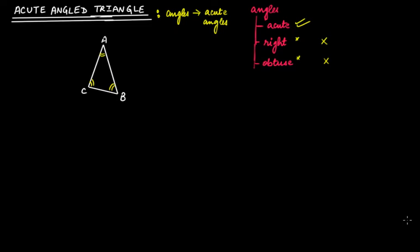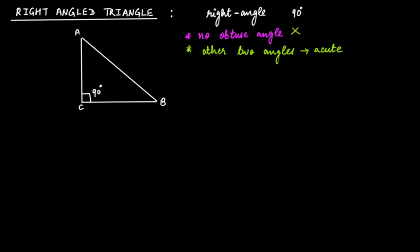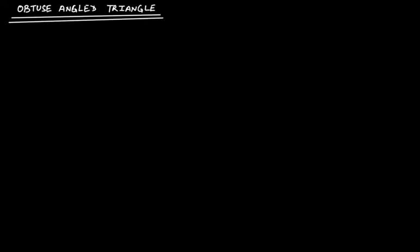We have discussed acute angle triangles and right angle triangles, and now it's time for the obtuse angle triangle. As the name suggests, an obtuse angle triangle is a triangle that has one obtuse angle in it.